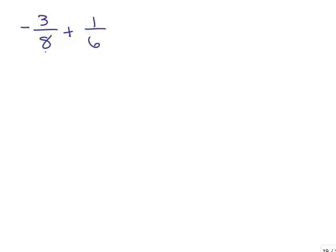So the first thing is to determine the common denominator of 6 and 8, and there are a variety of ways you could do that. I like this little method where I find what goes into both 6 and 8 — there's a 2. 2 goes into 6 three times and 2 goes into 8 four times, then you multiply across: 6 times 4 or 8 times 3. So the least common denominator is 24. You could use any method you want for figuring out the least common denominator.